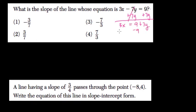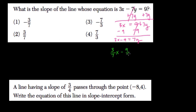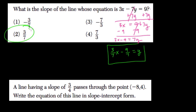I want y by itself. Subtract 9 on both sides. We get 3x minus 9 equals 7y. I don't want 7y, I just want y, so divide everything by 7. Three-sevenths x minus nine-sevenths equals y. So the slope is 3 over 7. Choice 2.